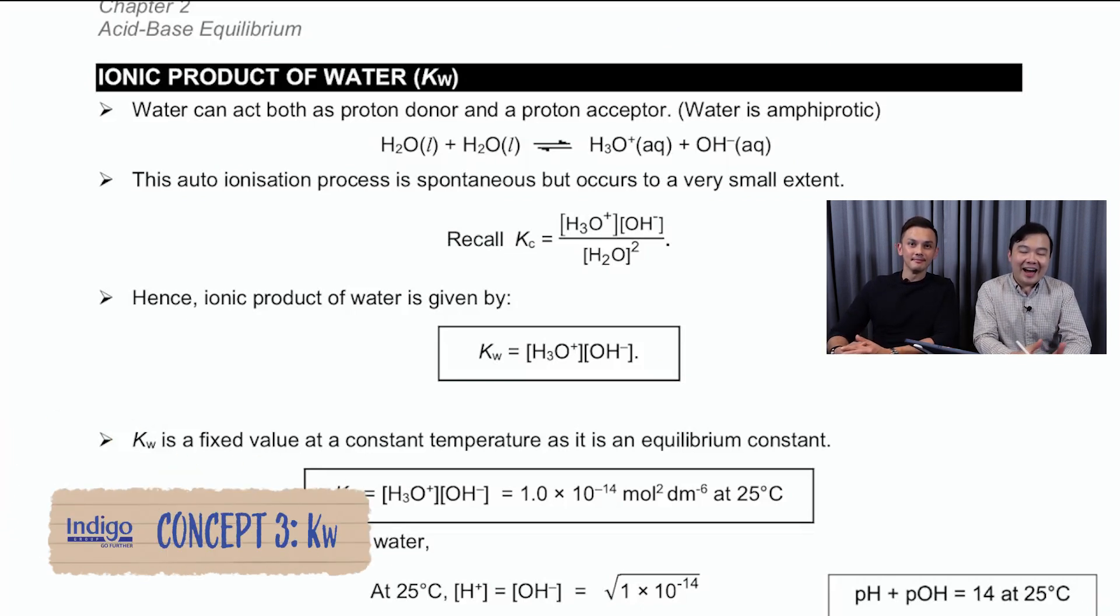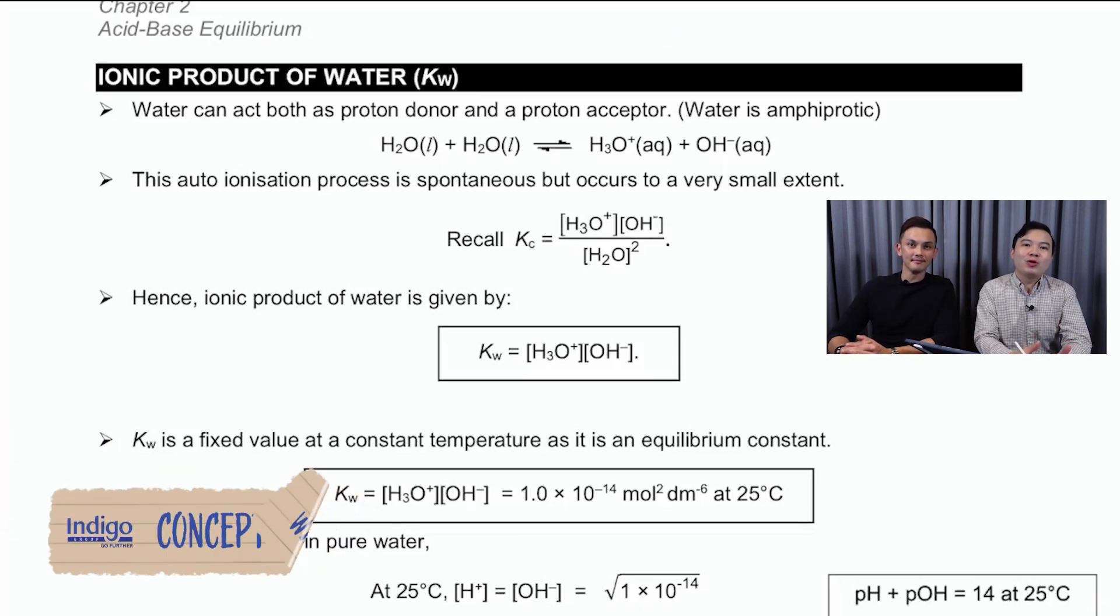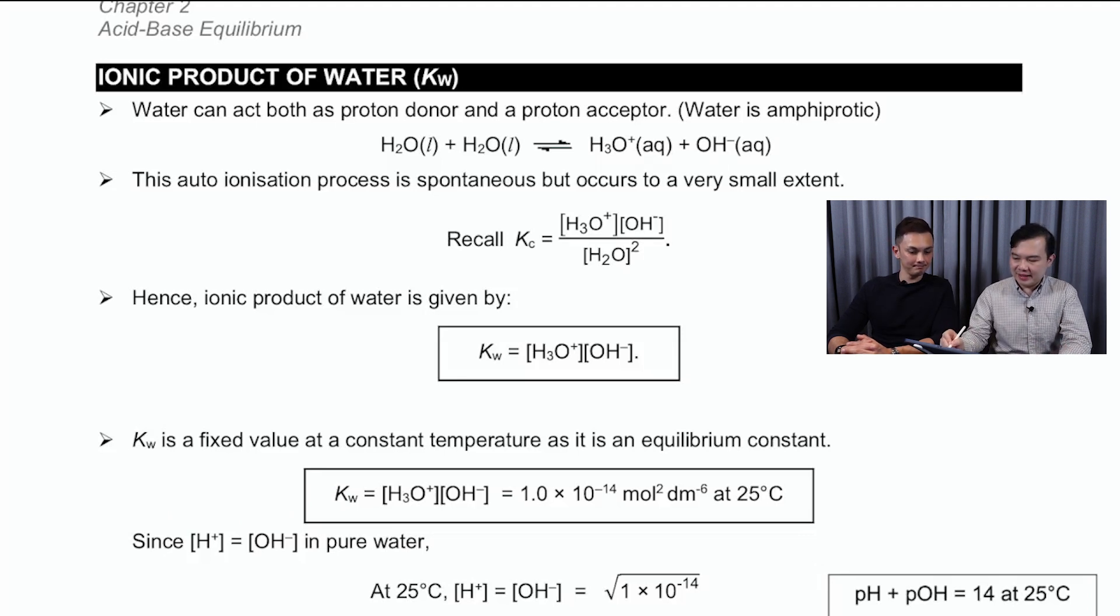The third concept, we'll be looking at the ionic product of water, which means that water on its own will undergo self-ionization. When that happens, it is going to be a reversible arrow and you're going to end up with two ions, H3O+ and OH-. Because we are dealing with an equilibrium, it should not come as a surprise to you that we can also write down the equilibrium constant. But once again, like what William said earlier, the water concentration should not be placed inside. So you will see that the expression does not have a denominator.